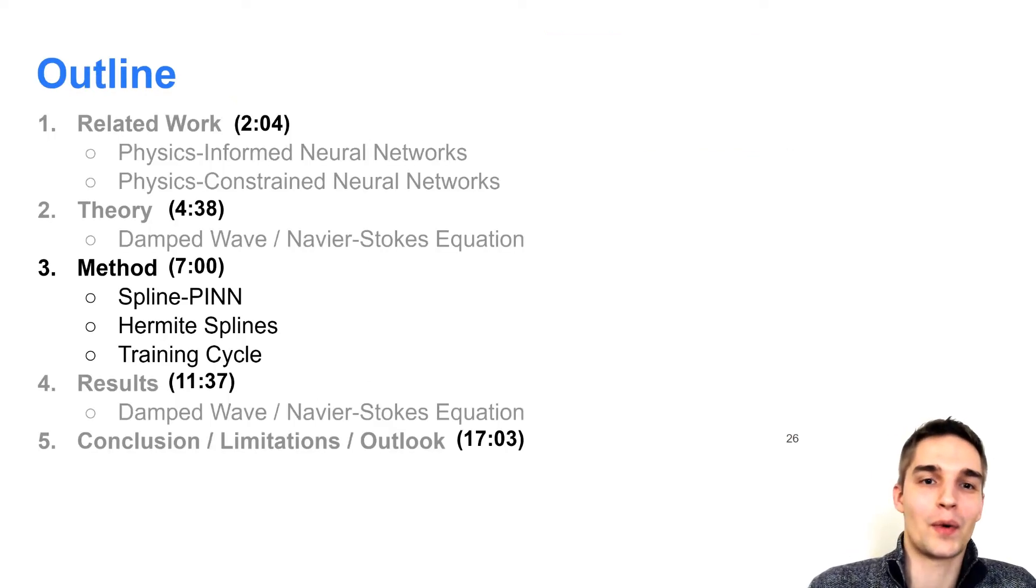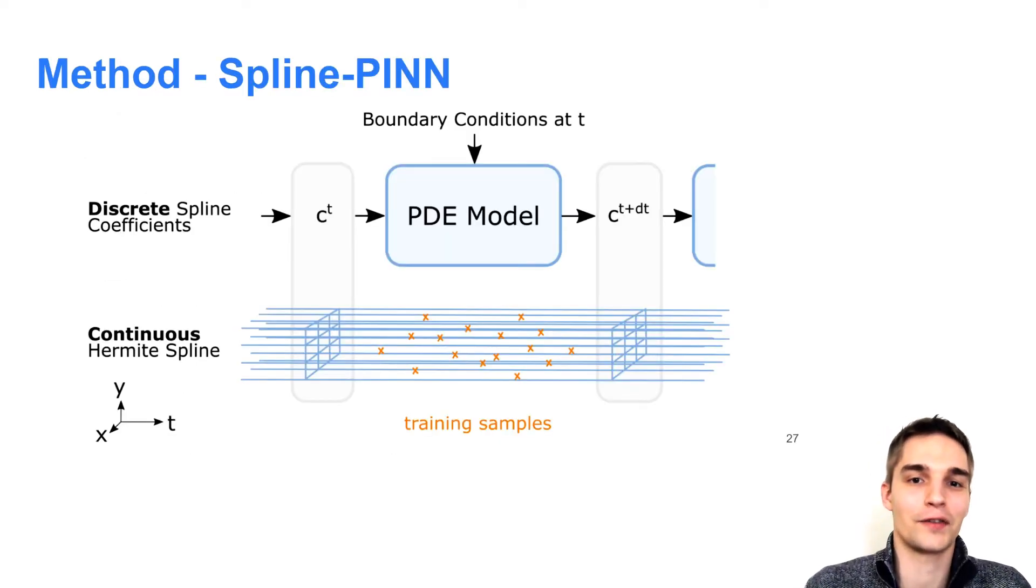To solve these equations, we propose a novel spline PIN model, which looks as follows. The state of the simulation is given by discrete spline coefficients that are arranged on a uniform grid. To evolve these spline coefficients in time for given boundary conditions at time t, we use a convolutional neural network, which is denoted here as PDE model. The boundary conditions consist of a binary mask for the domain boundaries and a vector field that contains the field values at the boundaries. The design of this PDE model can vary depending on the specific PDE we want to solve.